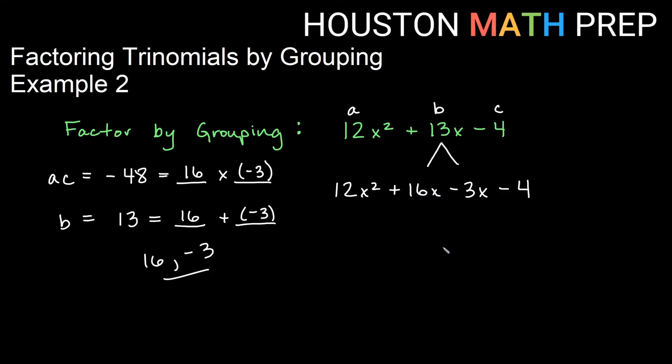So again we only break up the center term now we have four terms and just like we did in the factoring by grouping intro video we now look at greatest common factor in each pair. So 12x squared plus 16x. What is the GCF of that? Well I have a 4 and an x in common. If I factor out 4x from the first half I get a 3x left over in the first term and I get a 4 left over in the second term. Remember if you distribute you should get back what you started with. 4x times 3x is that and 4x times 4 is that.